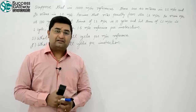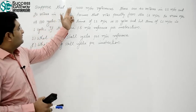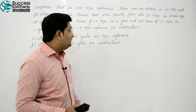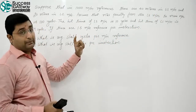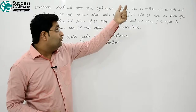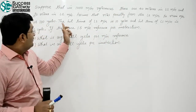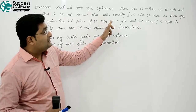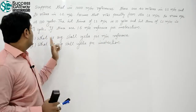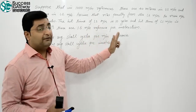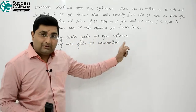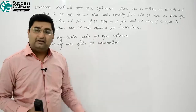Now, let's move to the next variety of example. Suppose that for 1000 memory references, there are 40 misses in L1 memory and 20 misses in L2 memory. Assume that the miss penalty from L2 memory to main memory is 100 cycles. The hit time of L2 memory is 10 cycles and hit time of L1 memory is 1 cycle. If there are 1.5 memory references per instruction, what is the average stall cycles per memory reference and what is the average stall cycles per instruction?